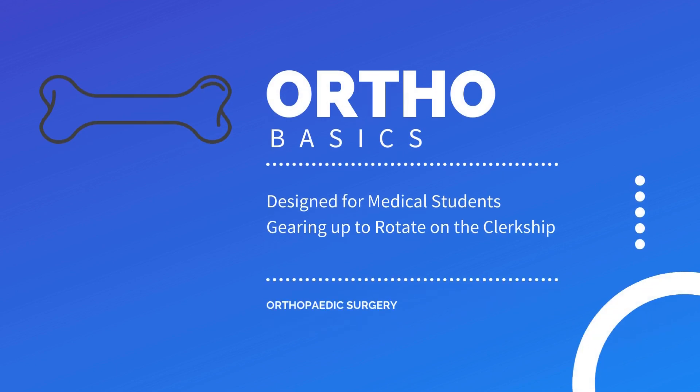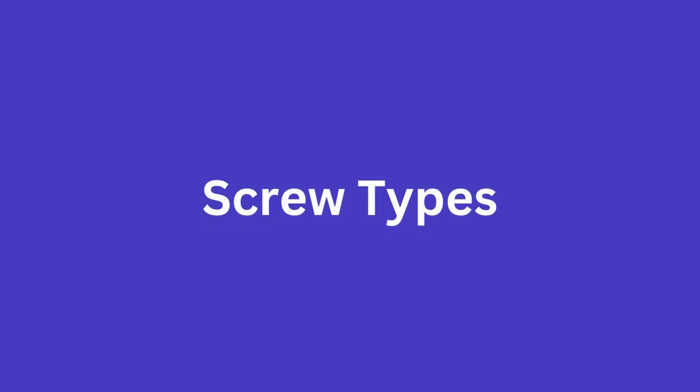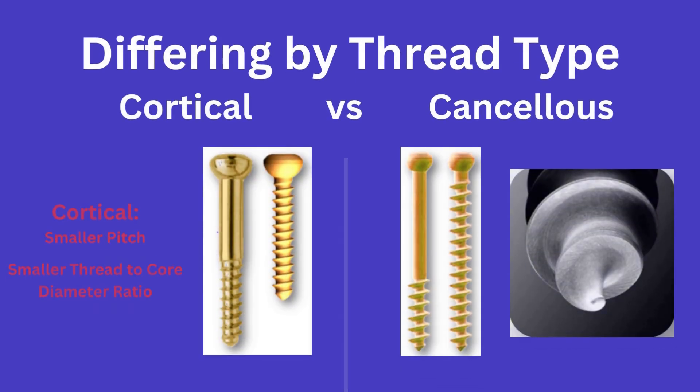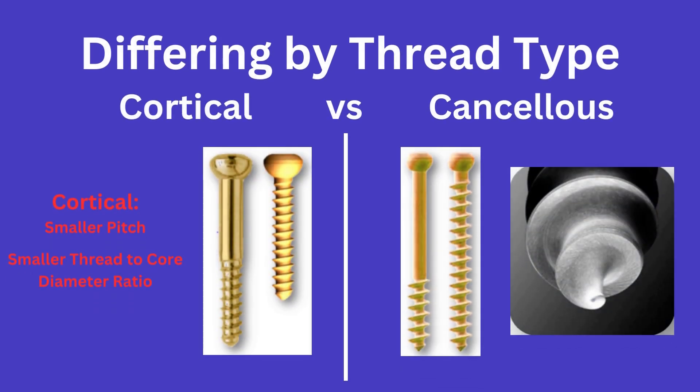Continuing on with our discussion of screws, today we will go over the different types. To start us off, screws can differ based on thread type. There are cortical and cancellous screws, and each can come either fully threaded or partially threaded.